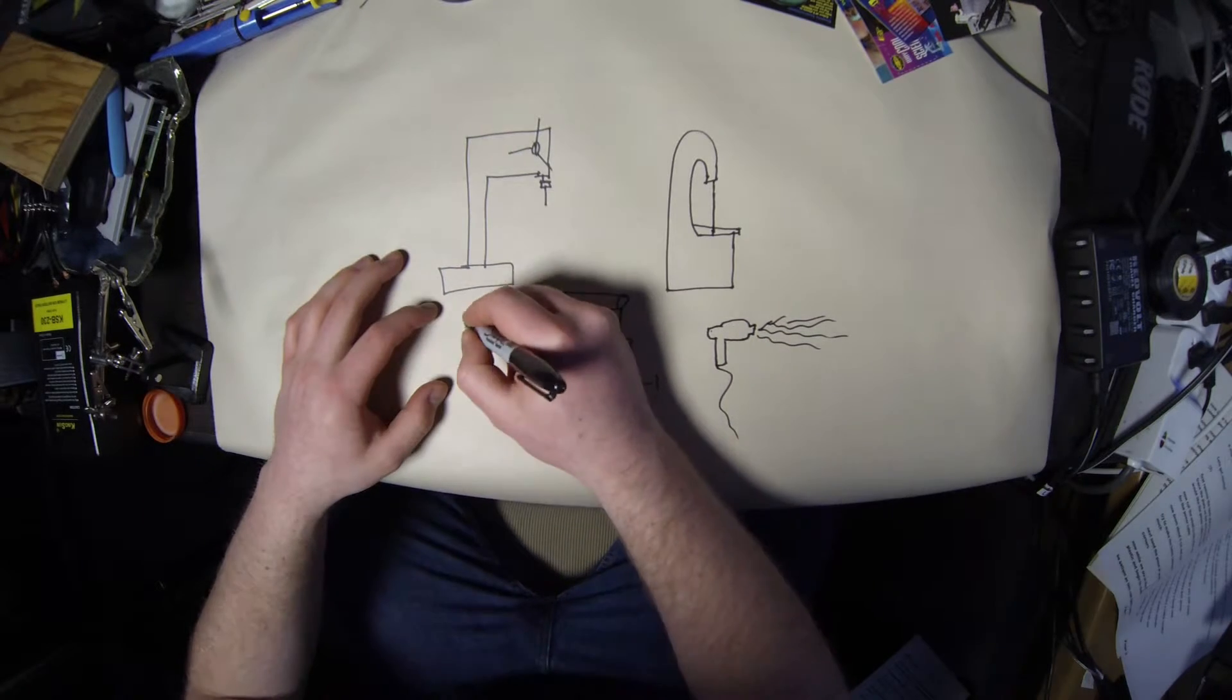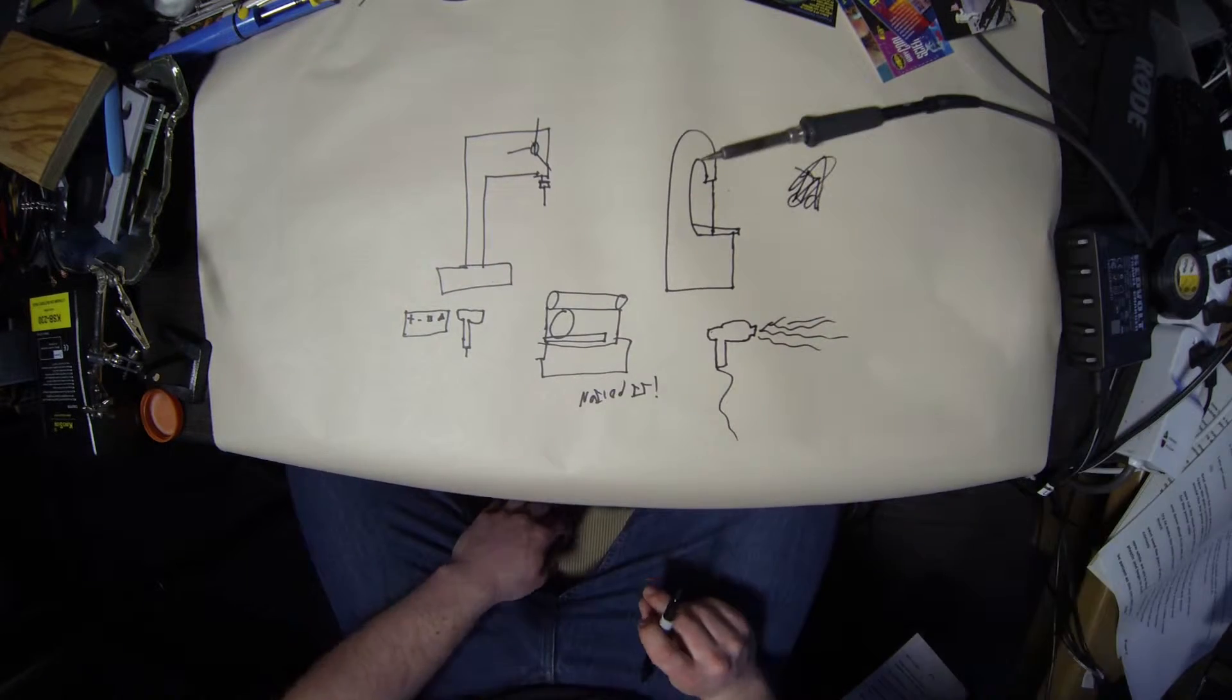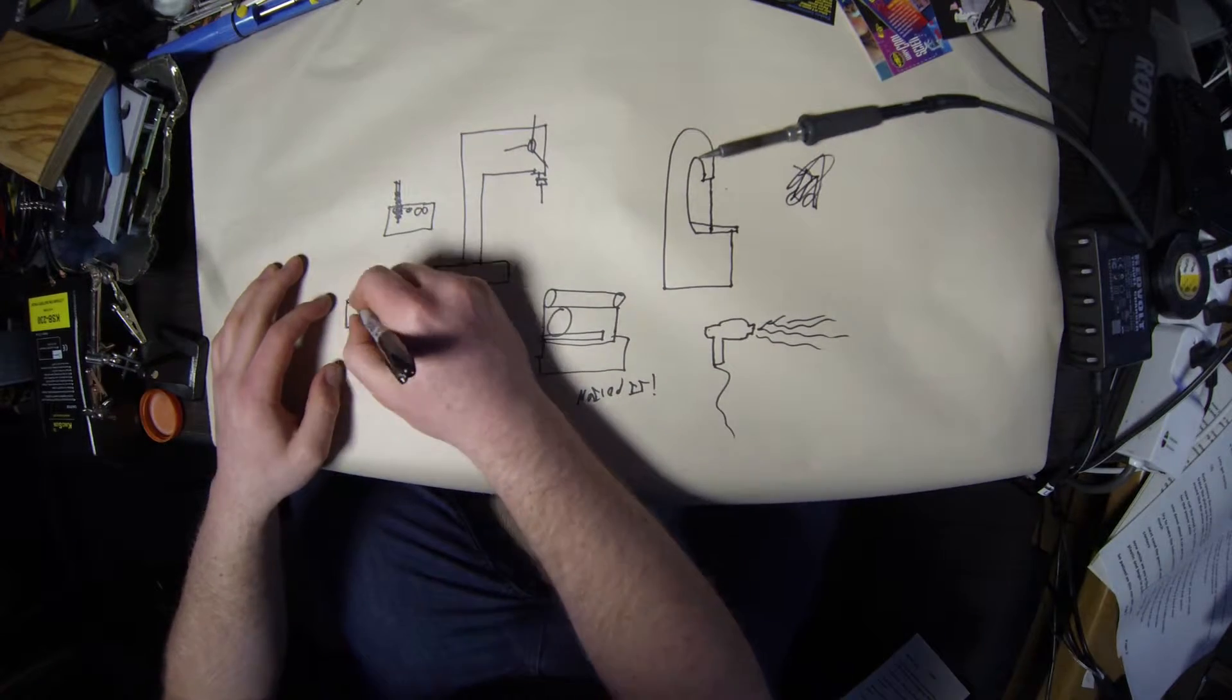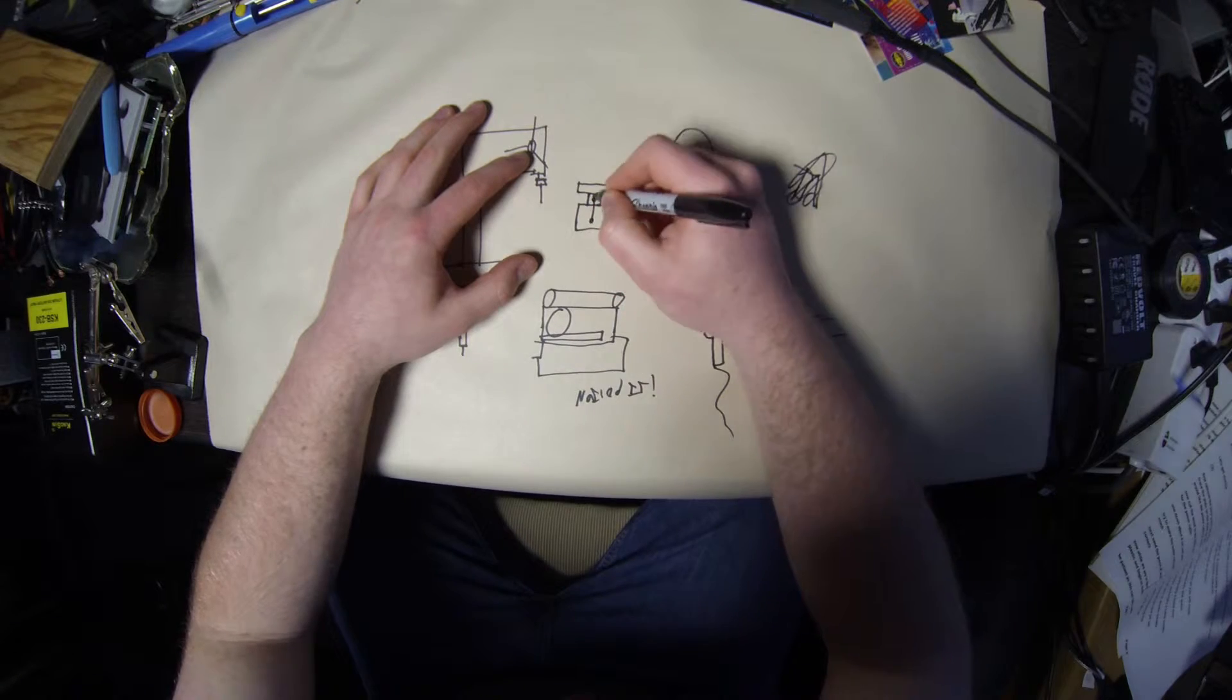A screwdriver and bit set. A soldering iron. A drill bit set, obviously. A black paint, which is optional but definitely would make everything look a bit nicer. And a bench vise, which is also optional but it'll make the bending of the plastic a bit easier.